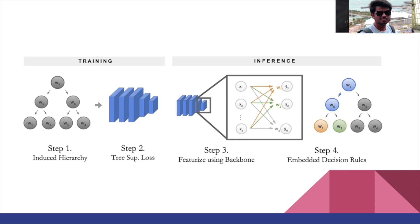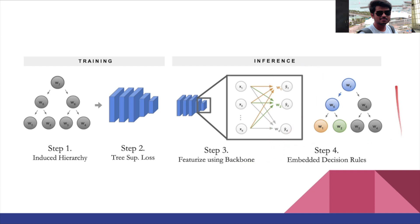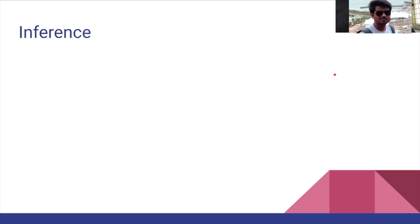Let's look at the training and inference pipeline. It is divided into four parts. Training has two phases: first, we construct the induced hierarchy for the decision tree; second, we train the neural network with a special loss term called the tree supervision loss. Then for inference, we pass the sample through the neural network backbone and finally run the fully connected layer as a series of decision rules arranged in the form of a decision tree.